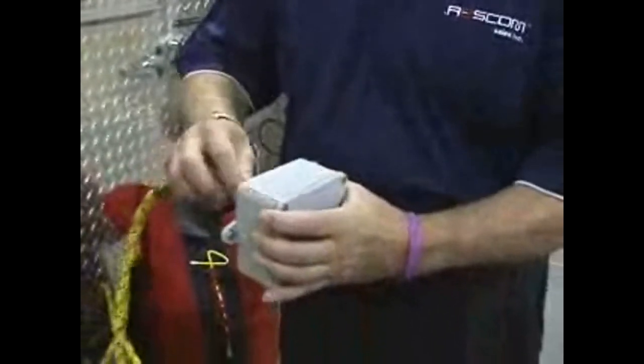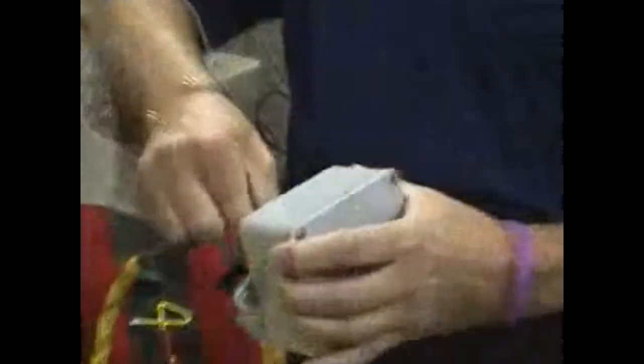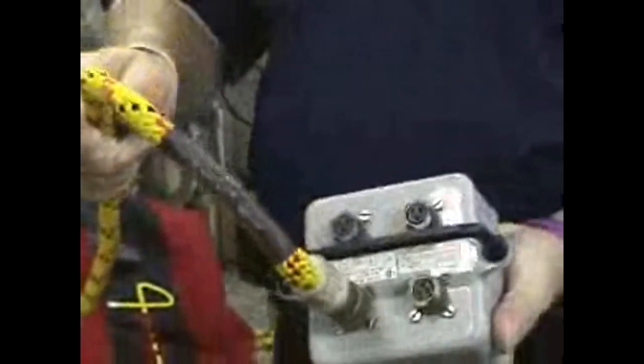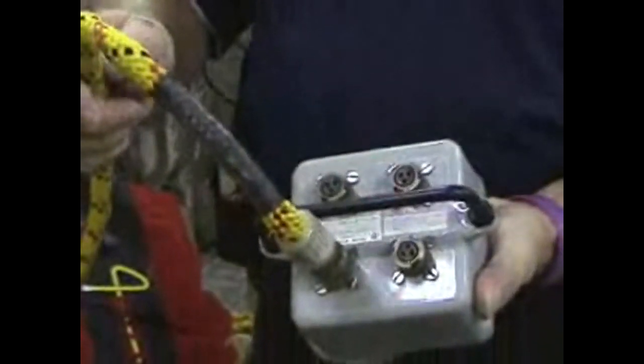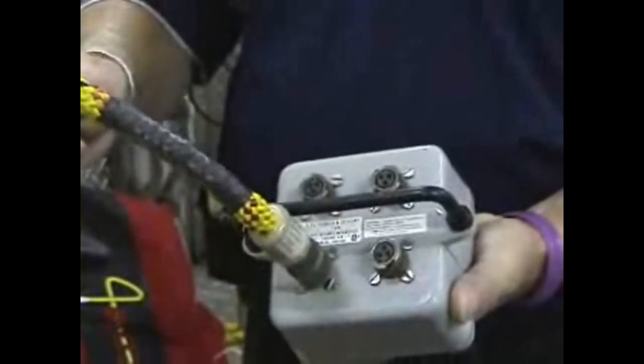The final step in completing the system is to take the communication rope and connect it to a junction box. Once connected, you can now add other entrants to the system.